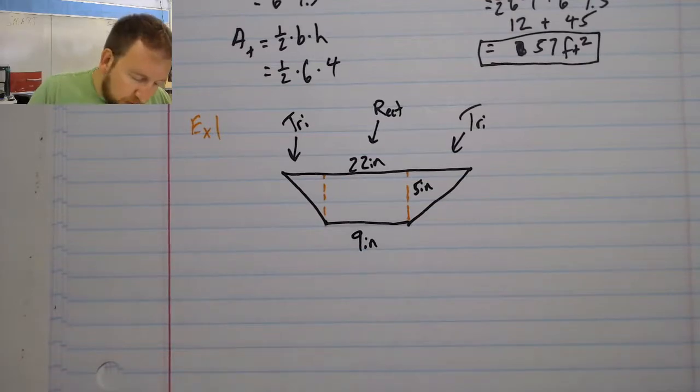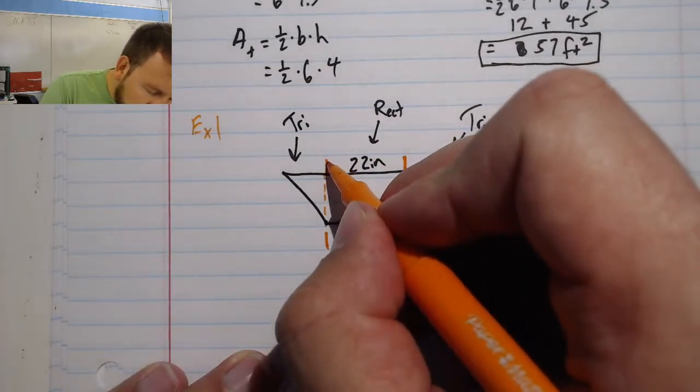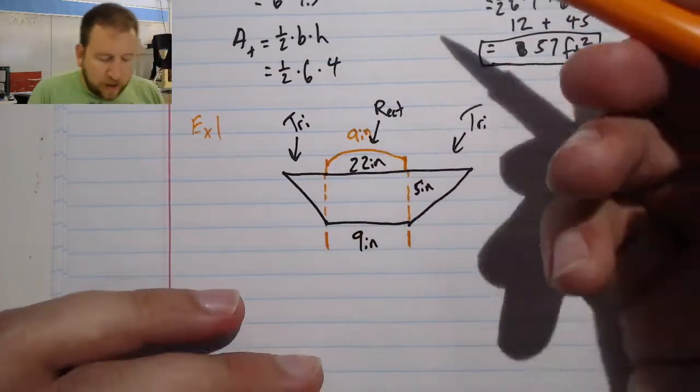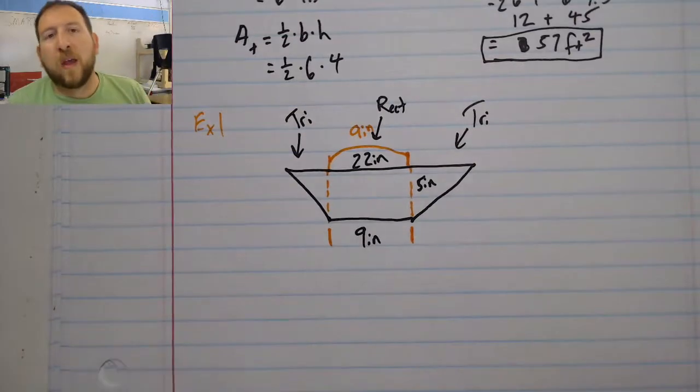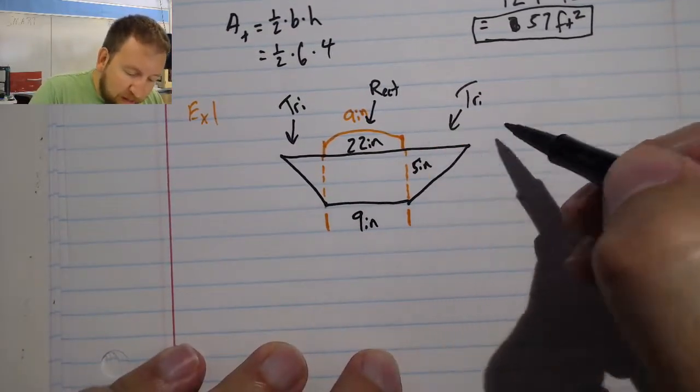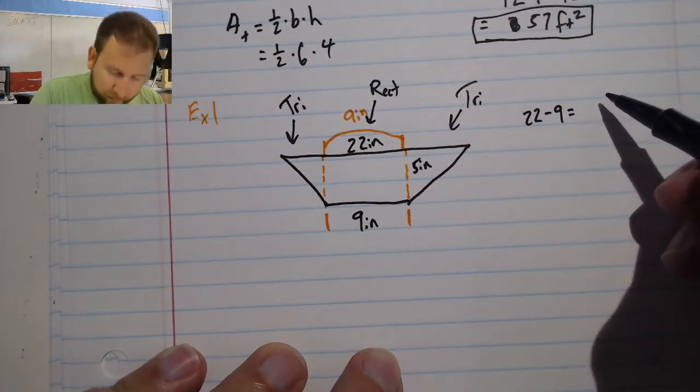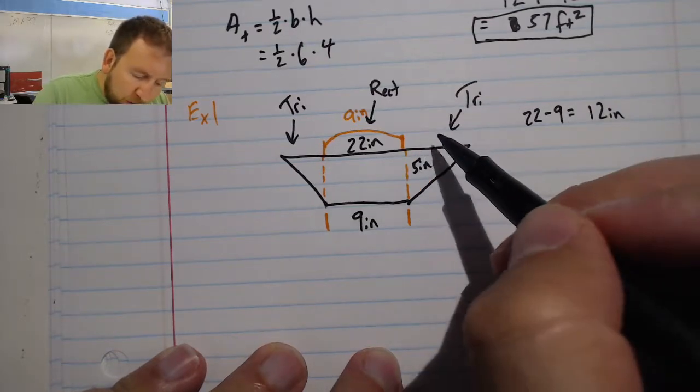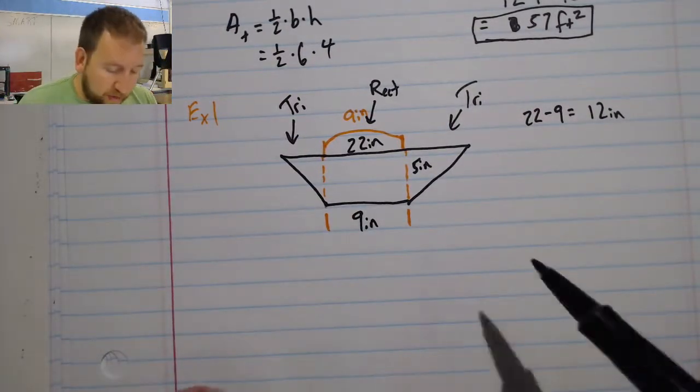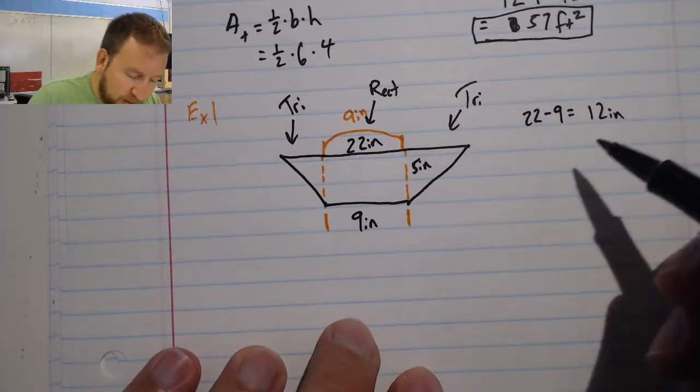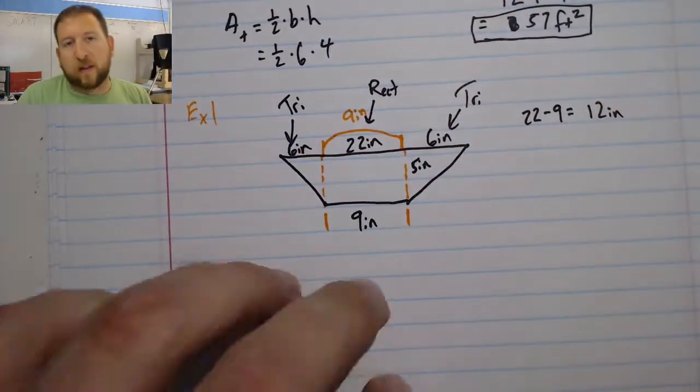The way that I can do this is I can say, well, this right here is 9 inches. That means I know this right here is also 9 inches. That means the space left over on each side is going to be a total of whatever's left. So I can say that the total is, I can do 22 minus 9, and that's going to be 12, right? So there's 12 inches between this side and this side over here. And since I know that they're going to be equal, that they're equal triangles, I know that I'm going to have 6 inches on each of these sides based on the shape of this.